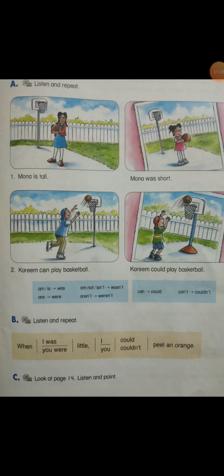Listen and repeat. Mona is tall. Mona was short. Is — present. Was — past. Tall and short are opposites. The opposite of tall is short. Karim can play basketball. Karim could play basketball. Can — present. Could — past. So we have is and was, can and could — present and past.